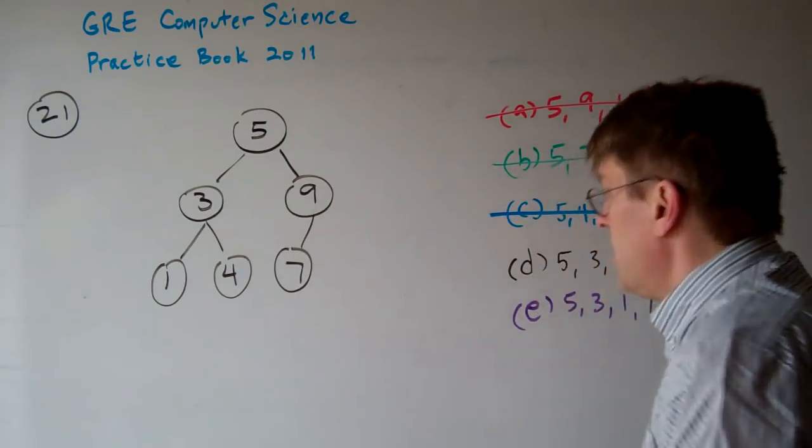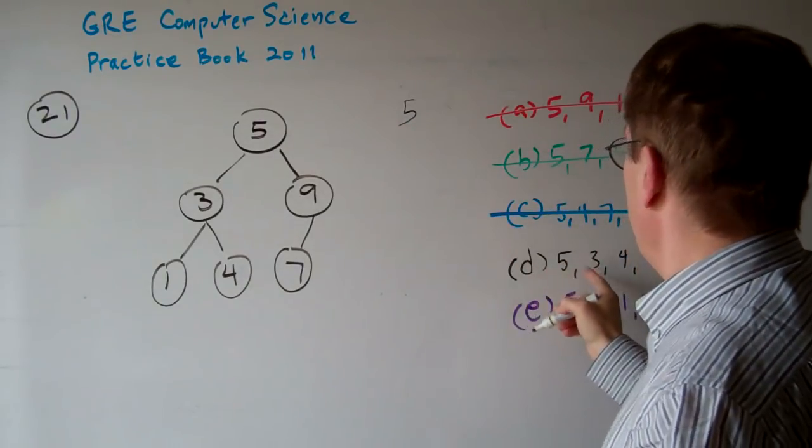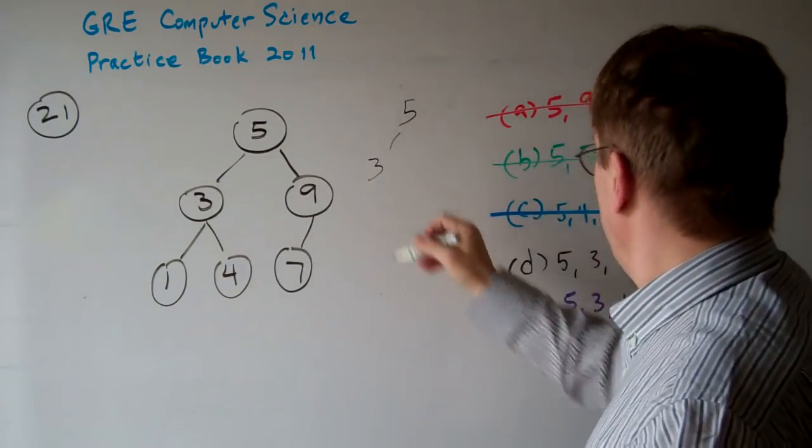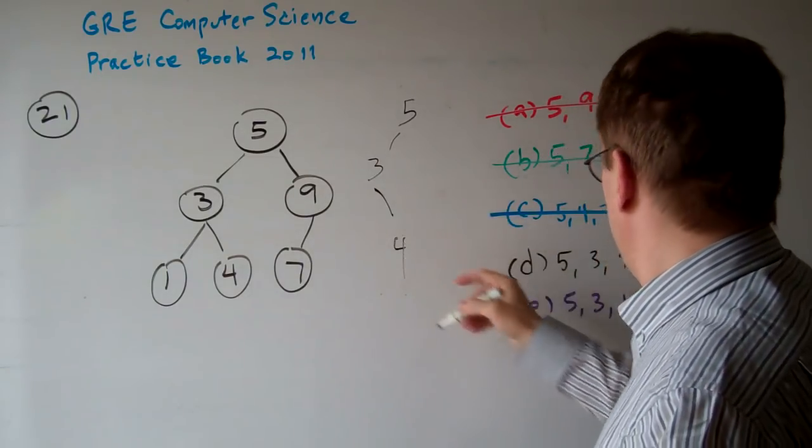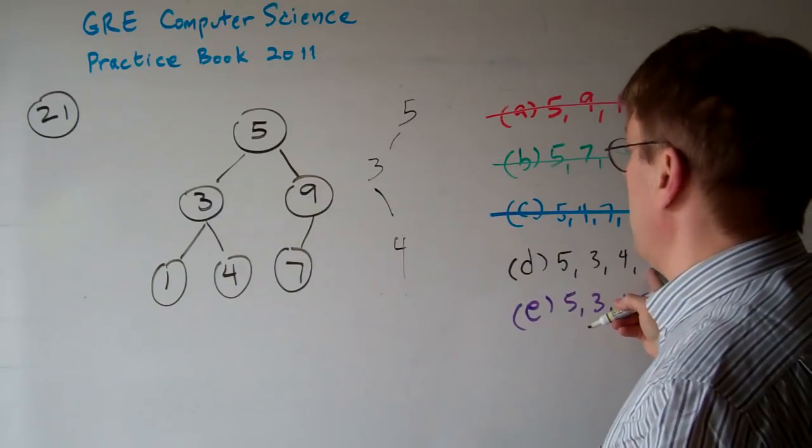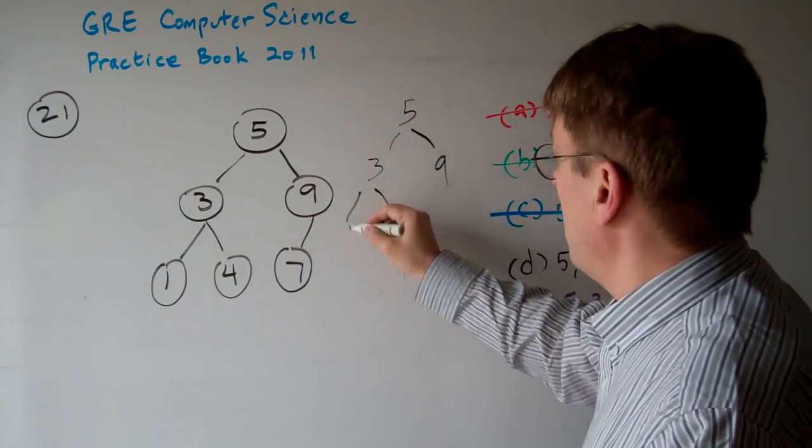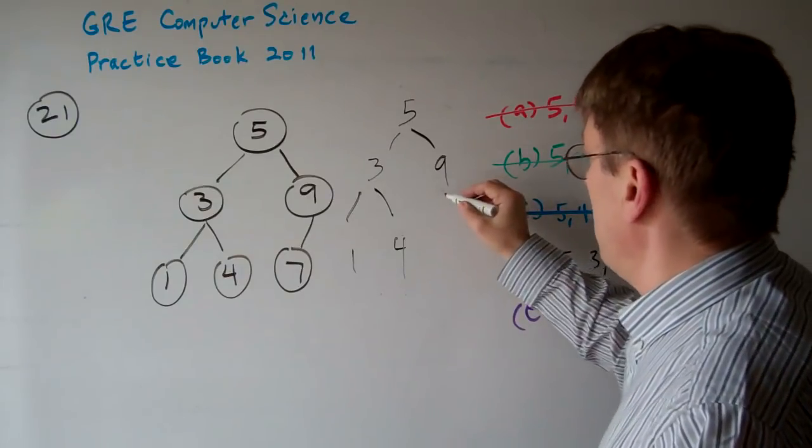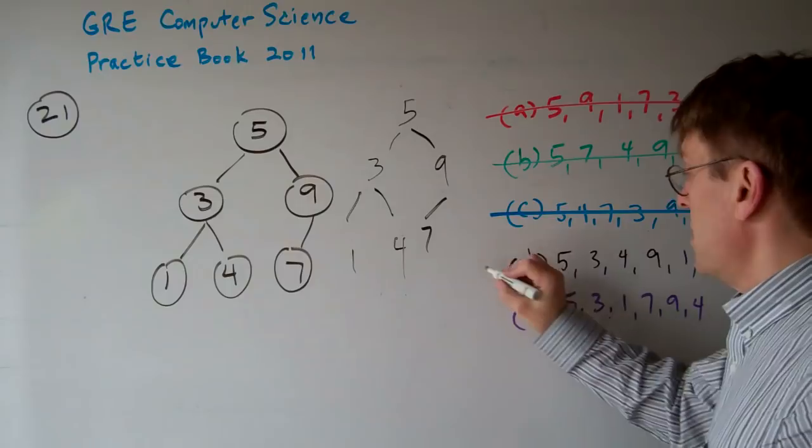Let's try D. D, we get 5, 3, okay that's good. 4, okay that's good. 9, okay. 1, okay. 7. All right. That one looks good. Looks like it's going to be D.